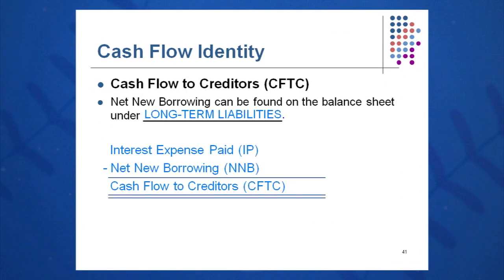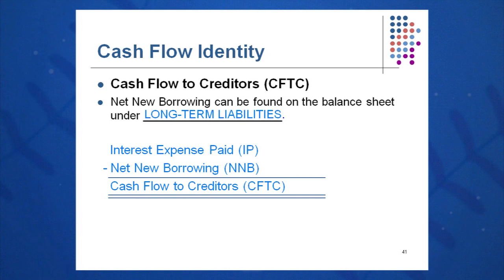The second way to calculate CFFA is CFTC plus CFTS — cash flow to creditors plus cash flow to stockholders. For cash flow to creditors, take interest expense from the income statement minus net new borrowing. Net new borrowing is found by looking at long-term debt: ending long-term liabilities minus beginning long-term liabilities, subtracted from interest expense paid. This gives you cash flow to creditors.